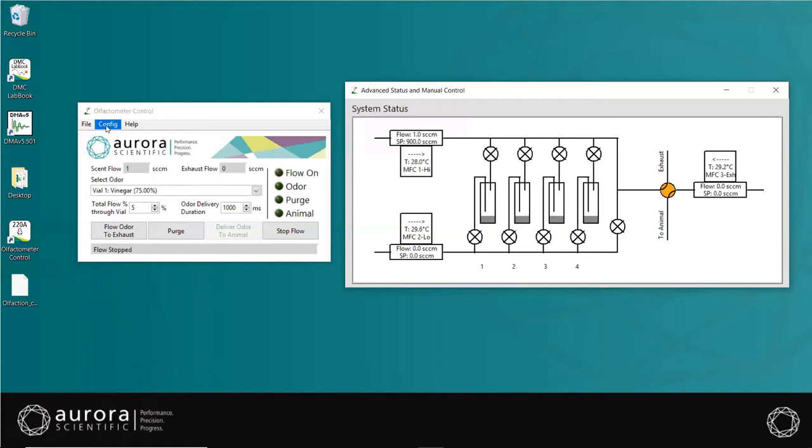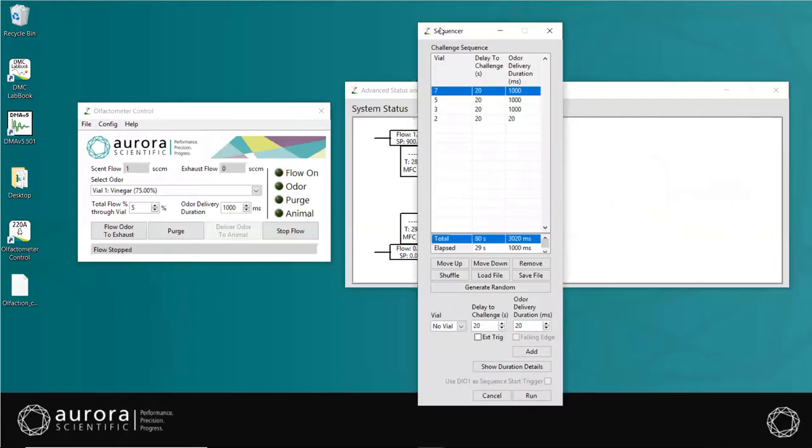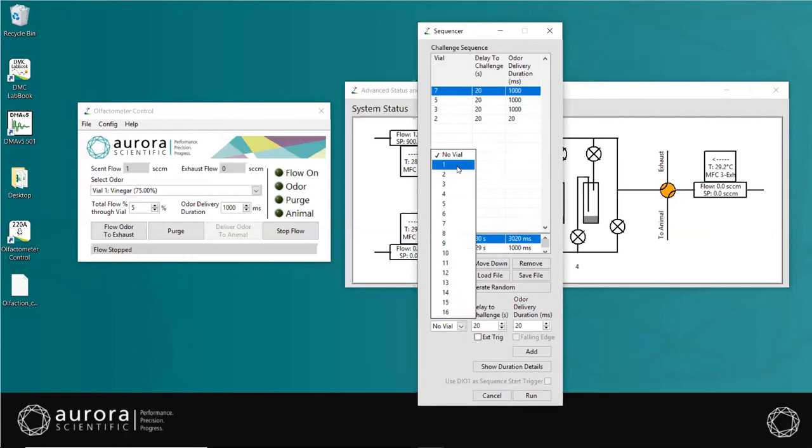Next, let's dive into the two methods of odor delivery with this system. The first uses a predefined sequence of odor challenges automatically executed by the software. The sequencer window allows the user to create a sequence of challenges to be executed by the olfactometer with predefined timing or based on the sequence trigger signal. The user can manually create a sequence to their specifications, or they can have the software generate a random sequence using their chosen parameters. To write a sequence, first select the vial number to be used from the drop-down.